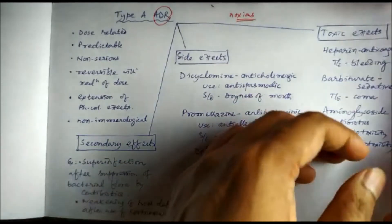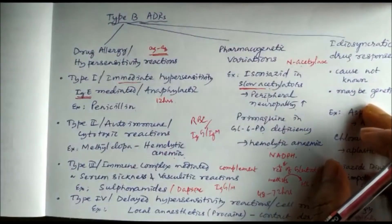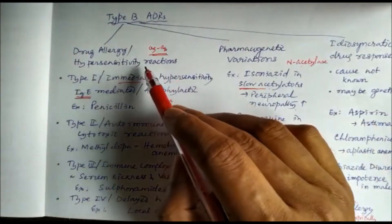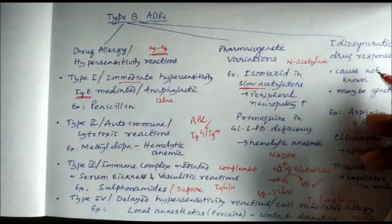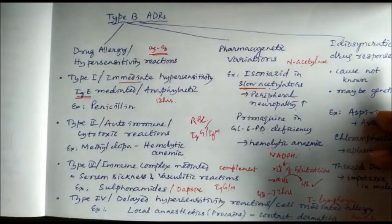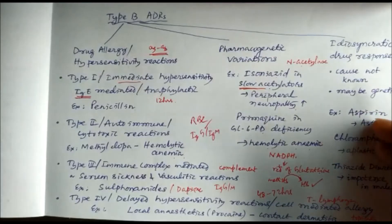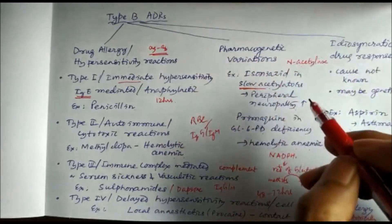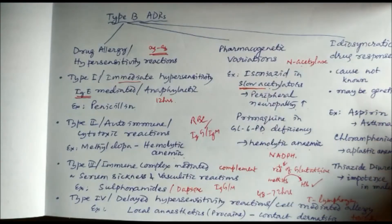Type B adverse drug reactions, B for bizarre, are non-dose-related and can be of three types: allergy or hypersensitivity reactions, pharmacogenetic variations, or idiosyncratic drug responses. Idiosyncratic drug responses means the cause is not known. Previously many idiosyncratic drug responses are now included under pharmacogenetic variations because the genetic cause is established. Some examples of idiosyncratic drug responses are aspirin-induced asthma, chloramphenicol-induced aplastic anemia, and thiazide diuretics-induced impotence in males.